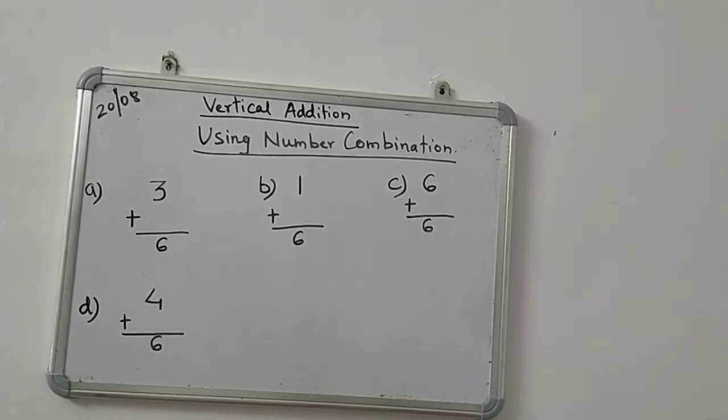That day we had done the number combination worksheet. Today I am going to revise that concept. I have taken 6 - we have to find the number combinations of 6. So, 3: how much do we add to 3 to get 6? 3 mein aap kya plus karoge to get 6? So 3 ke baad 6 tak jana hai, count karo: 3 ke baad 4, 5, 6.